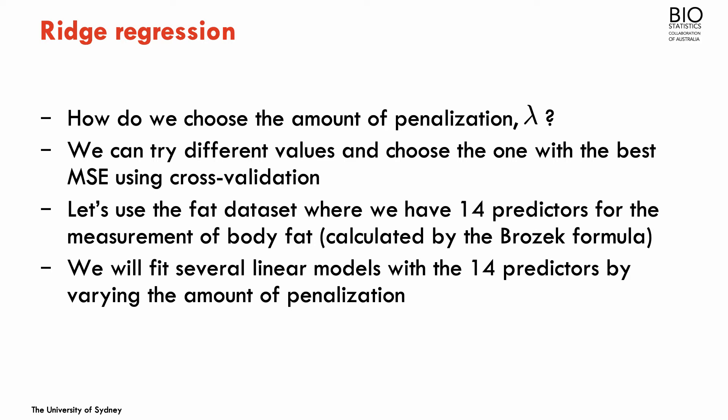How do we choose the amount of penalization — the parameter lambda? Lambda controls the amount of penalization: zero means no penalization, and higher values penalize more. What we can do is try different values of lambda through a grid search, fit the model for each value, and compute the mean square error using cross-validation. The lambda that achieves the smallest mean square error is the one we use.